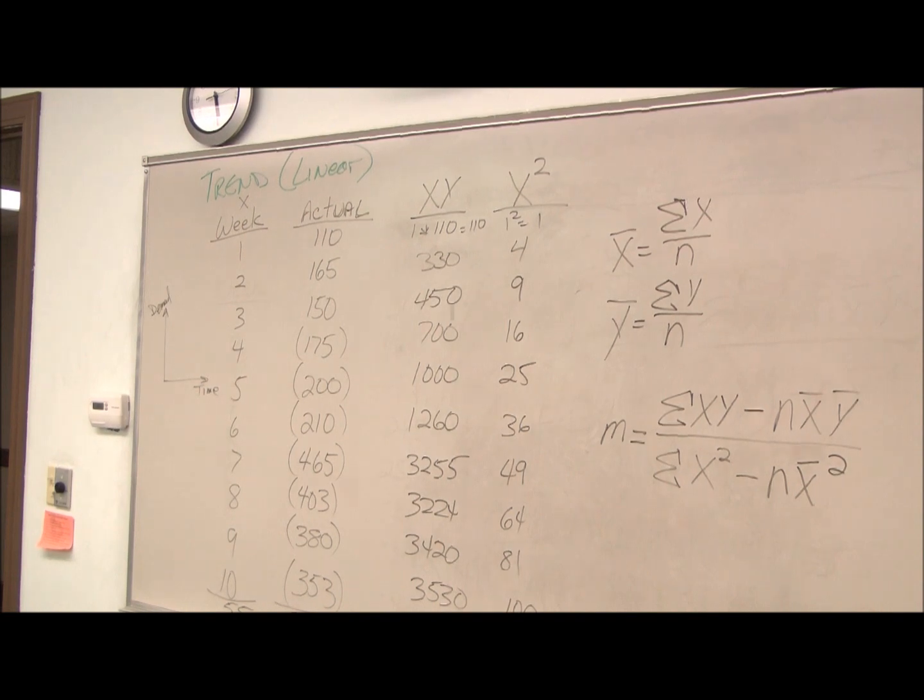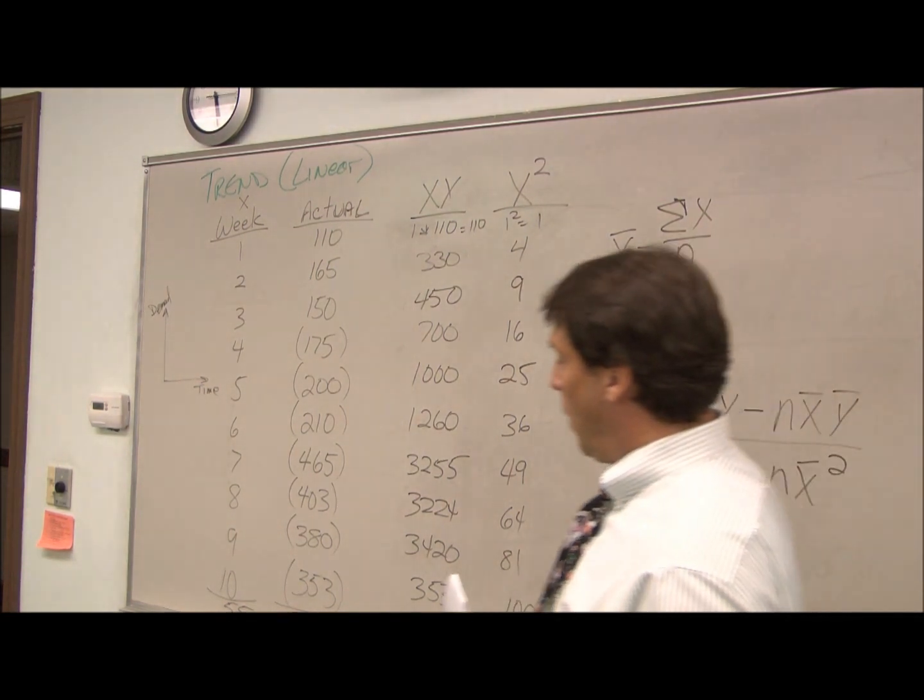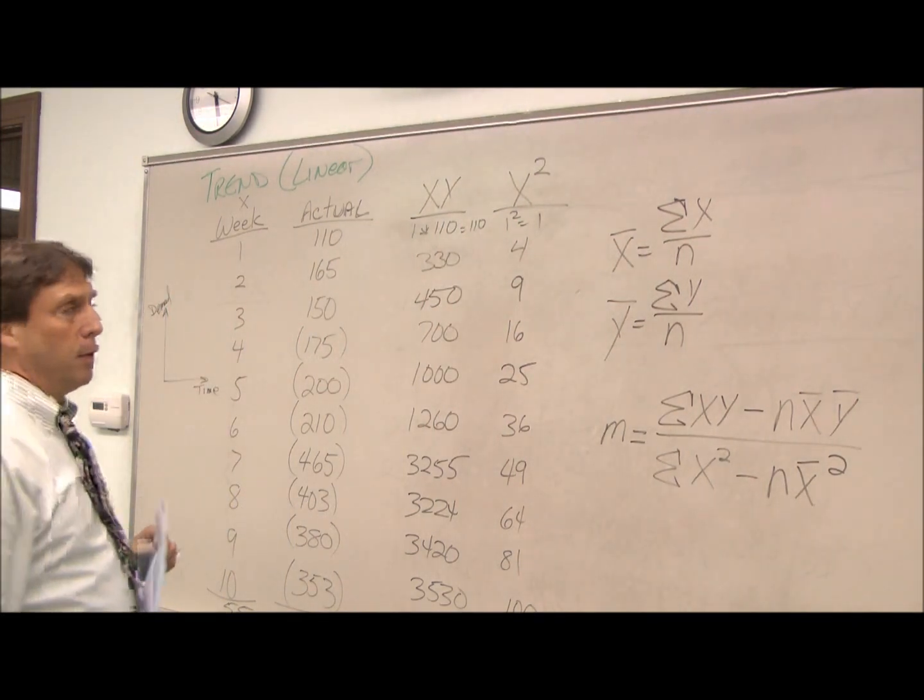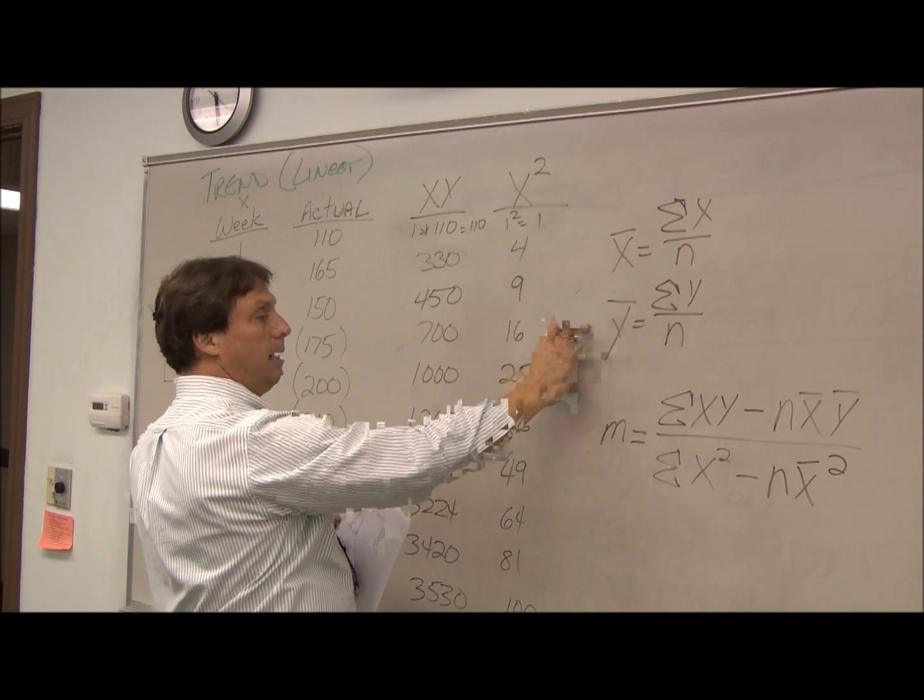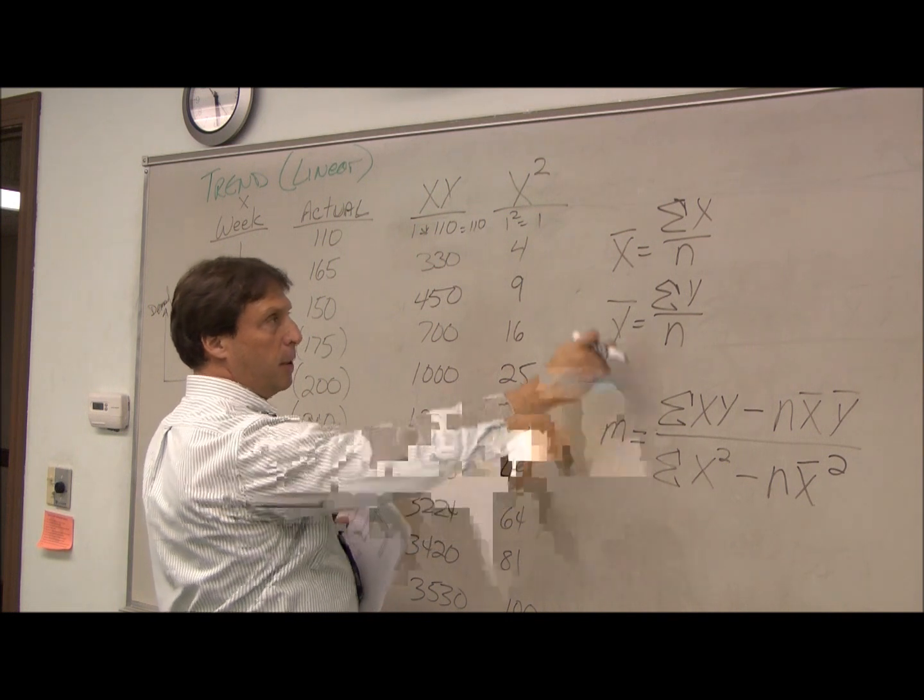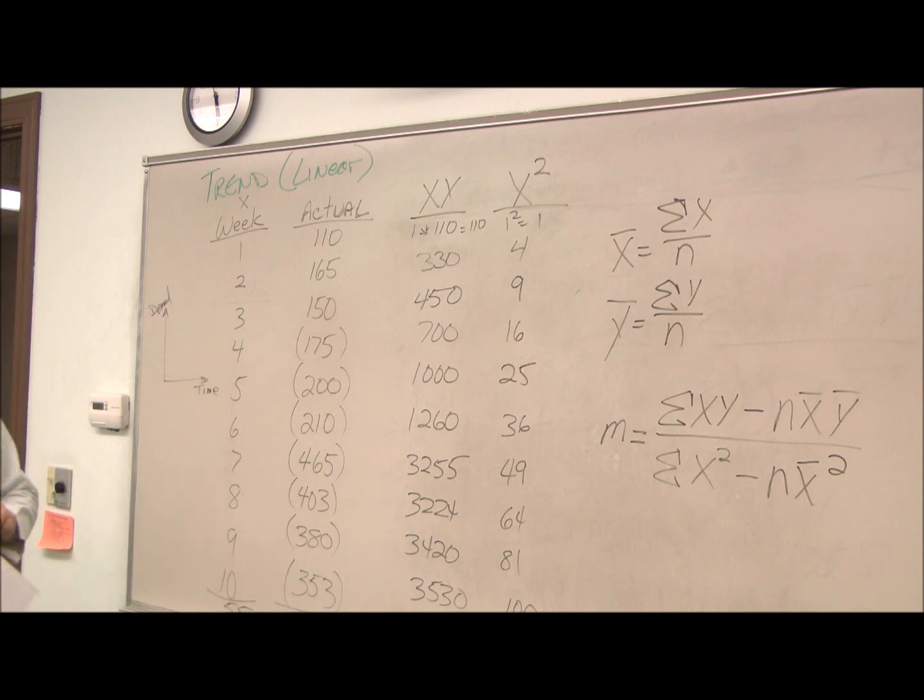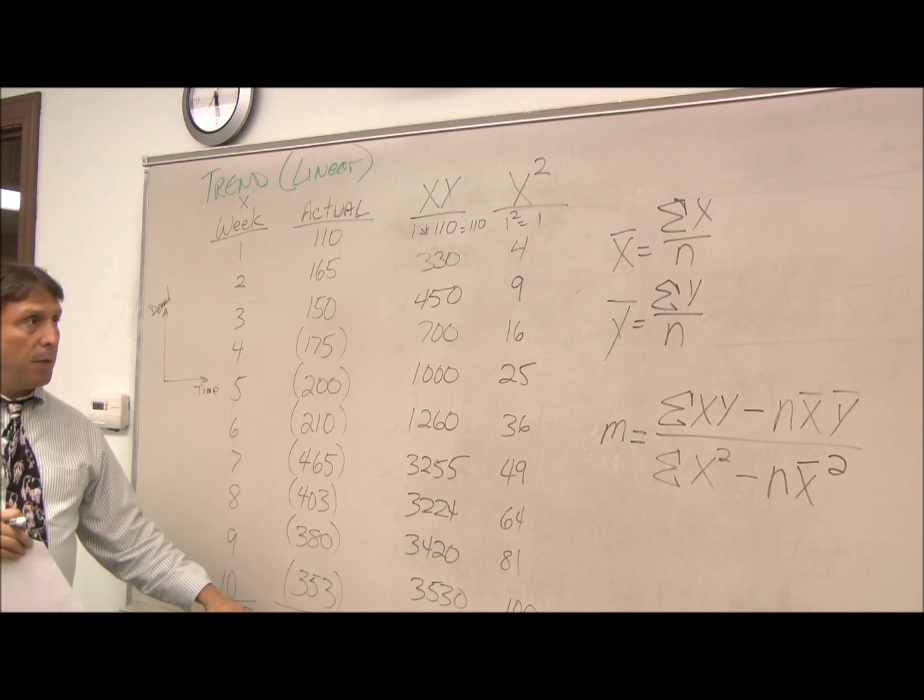All right. I just filled in the rest of the chart. But now we can start calculating values. The first values we need to plug into our slope equations are our x-bar and our y-bar. X-bar and y-bar are our average of our sum of our x's and the sum of our y's.